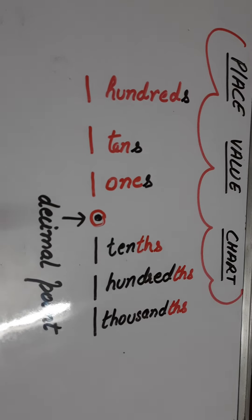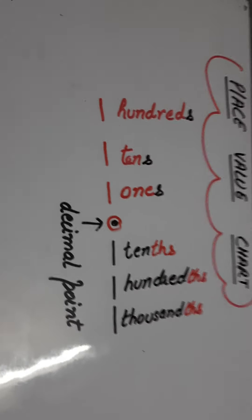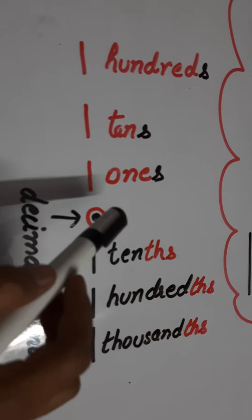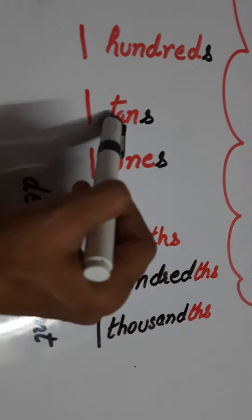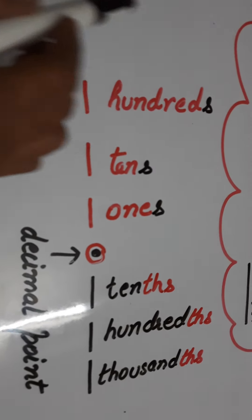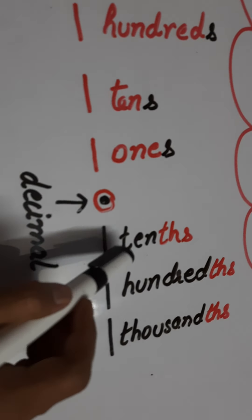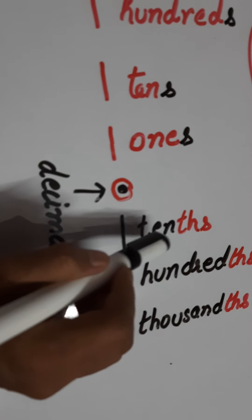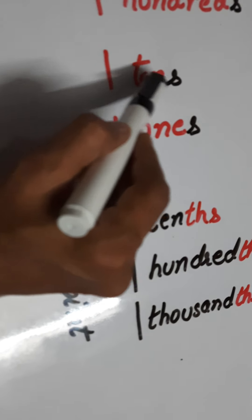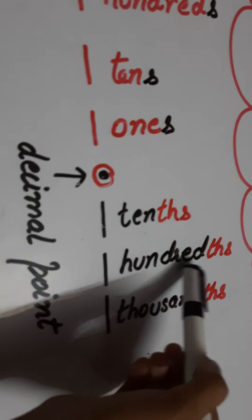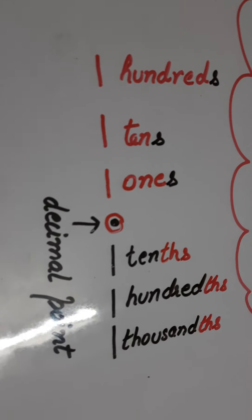Make this place value chart in your notebook. From this table you can understand: in the middle is the decimal point. On the left hand side we have ones, then tens, then hundreds, then thousands, ten thousands. When we move towards the right inside the decimal part, the first portion is tenths — 'th' is added, so ones becomes tenth, tens becomes tenths. Hundredths — add 'ths'. Thousandths — join the suffix 'ths' like this.